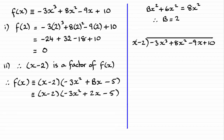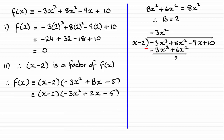So what we do is ask: what do we multiply x by to get minus 3x cubed? It has to be minus 3x squared. We multiply minus 3x squared by x minus 2 and put our answer down. So we get minus 3x cubed, and then minus 3x squared times the minus 2 gives plus 6x squared. We now subtract to work out our remainder. These two terms cancel, but we have 8x squared minus plus 6x squared, which gives 2x squared. Put that down and bring down the next term, minus 9x.